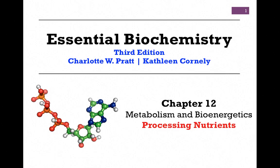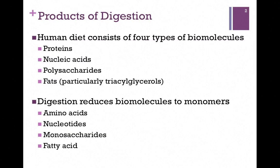We're considering Chapter 12 on metabolism and bioenergetics, and this is our second lesson on processing nutrients. The human diet consists of four types of complex biomolecules: proteins, nucleic acids, polysaccharides, and fats, especially triacylglycerols.